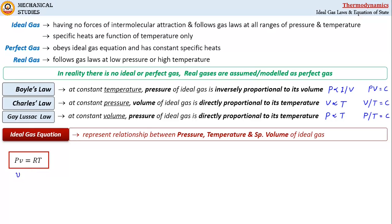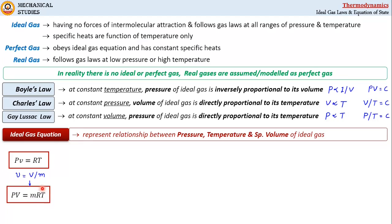We know specific volume of gas, small v, is expressed as volume per unit mass. If we substitute specific volume into this equation, we get a new form: pV = mRT, where capital V is total volume. Please note the difference carefully — small v is specific volume in pv = RT, and capital V is total volume in pV = mRT.